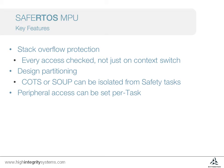Because the MPU covers the entire memory map, peripheral access permissions can be set on a per-task basis. Another feature of the MPU is that unprivileged tasks are unable to access global data structures unless explicitly set up to have permission.